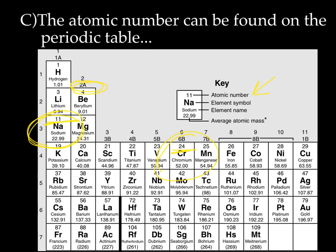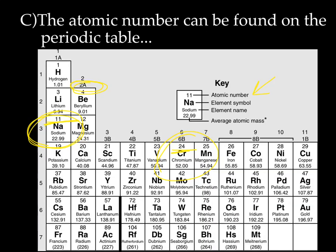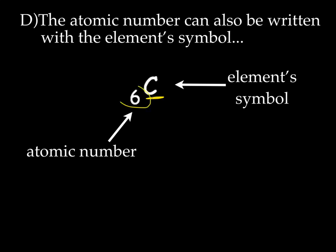So now let me ask you: if you run into a sodium atom, you know it has 11 protons — what else do you know? If it's a sodium atom and it has 11 protons, it also has 11 electrons. The atomic number can also be written with the element symbol. For carbon, below and to the left of the symbol is the number six — the atomic number for carbon is six.